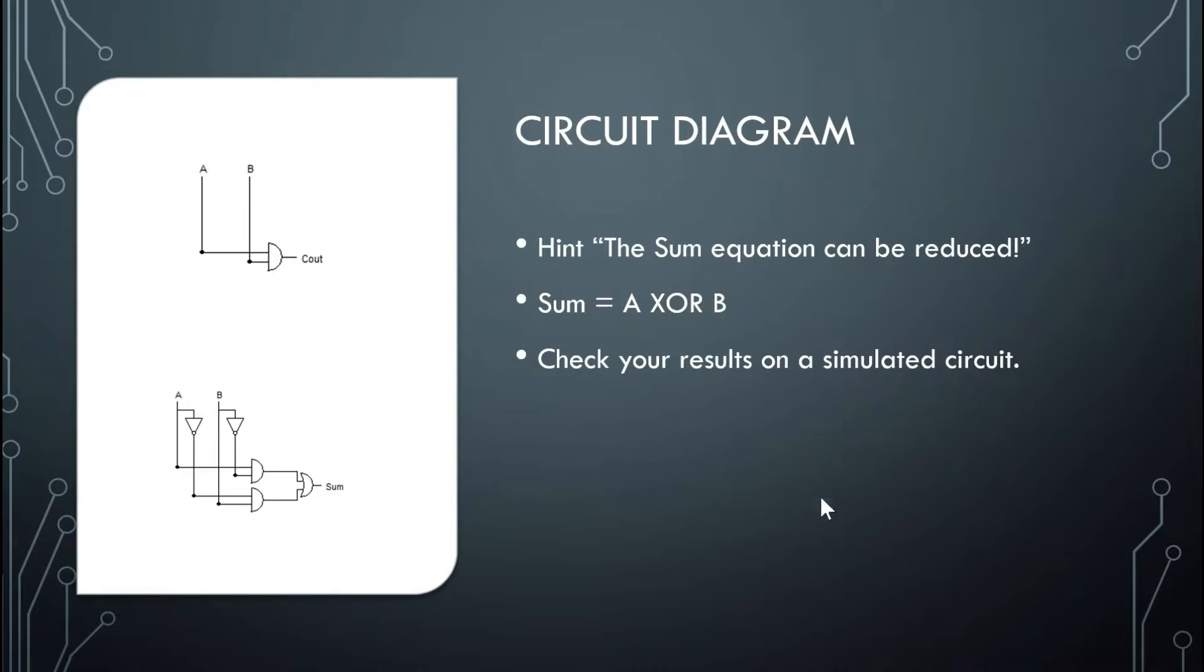Once you have your equations, we can draw the circuit. Like before, Cout was equal to A anded with B. And for the Sum, the Sum was not A and B, and not B and A, or them together. And that is the Sum.